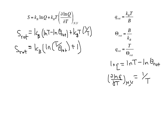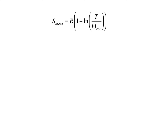If we want the rotational entropy per mole, then we need to replace the Boltzmann constant with the gas constant R. So our final equation for the rotational entropy is given by the gas constant times the quantity 1 plus the natural log of T divided by the rotational temperature.